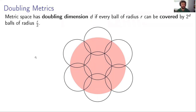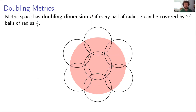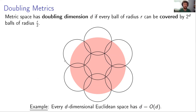A doubling metric is a generalization of the Euclidean dimension. We say a metric space has doubling dimension d if every ball of radius R can be covered by at most 2^d balls of half the radius. This is indeed a generalization: every d-dimensional Euclidean space has doubling dimension asymptotically d.